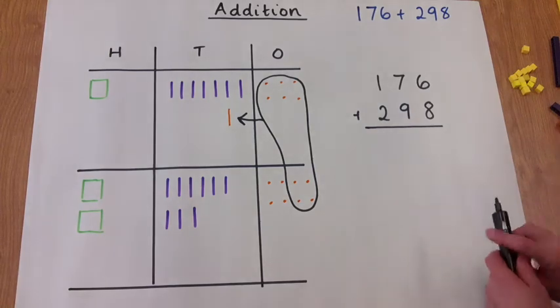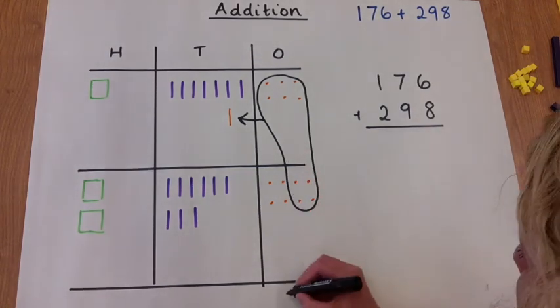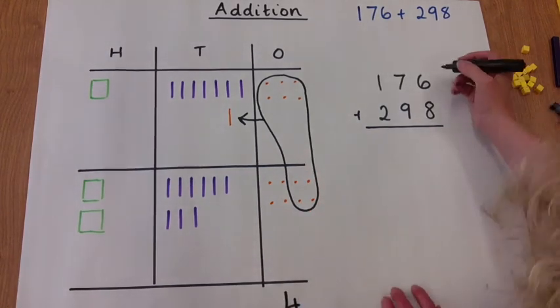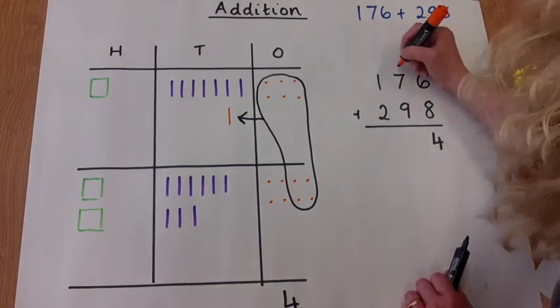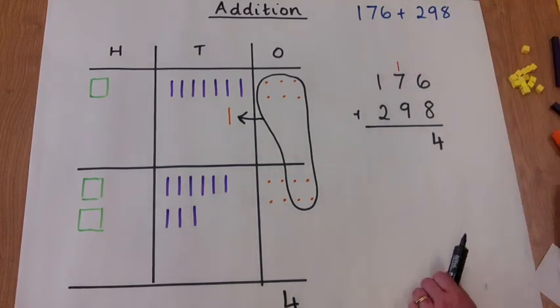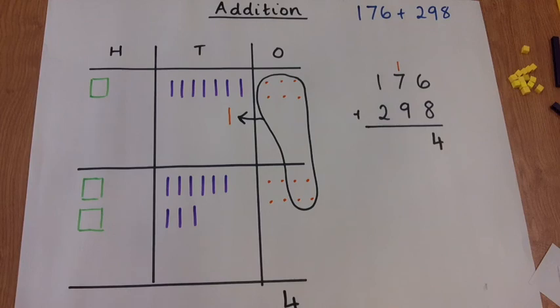On the abstract, we do exactly the same thing. Regroup the tens into the tens column and the 4 in the ones column, because 6 plus 8 makes 14.